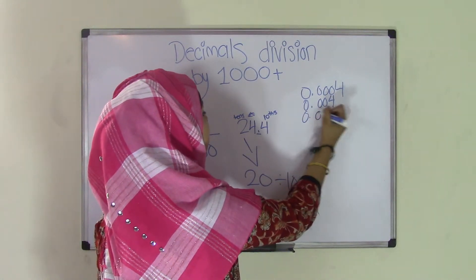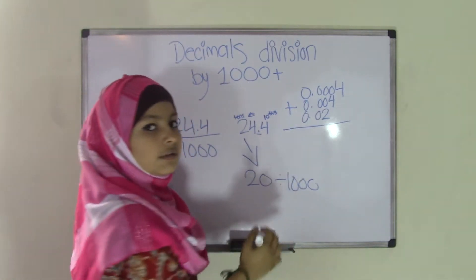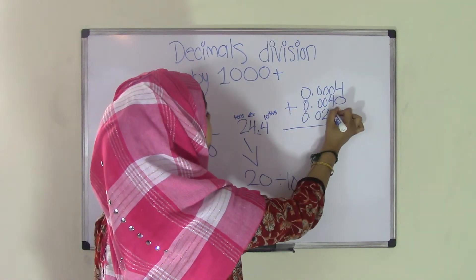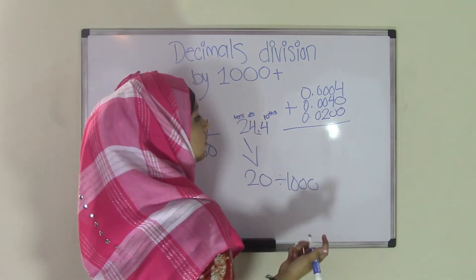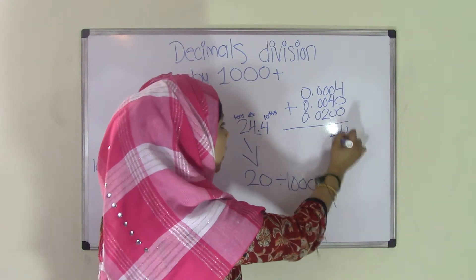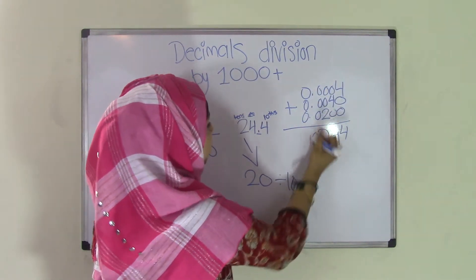Come over here, write 0.02. Now, all you have to do now is add these to get your final quotient. So let's just add 0s to where there are no numbers to make this easier for us to add. So 4 plus 0 plus 0 is 4. 0 plus 4 plus 0 is 4. 0 plus 0 plus 2 is 2. And these are just 0s, so just bring that down.